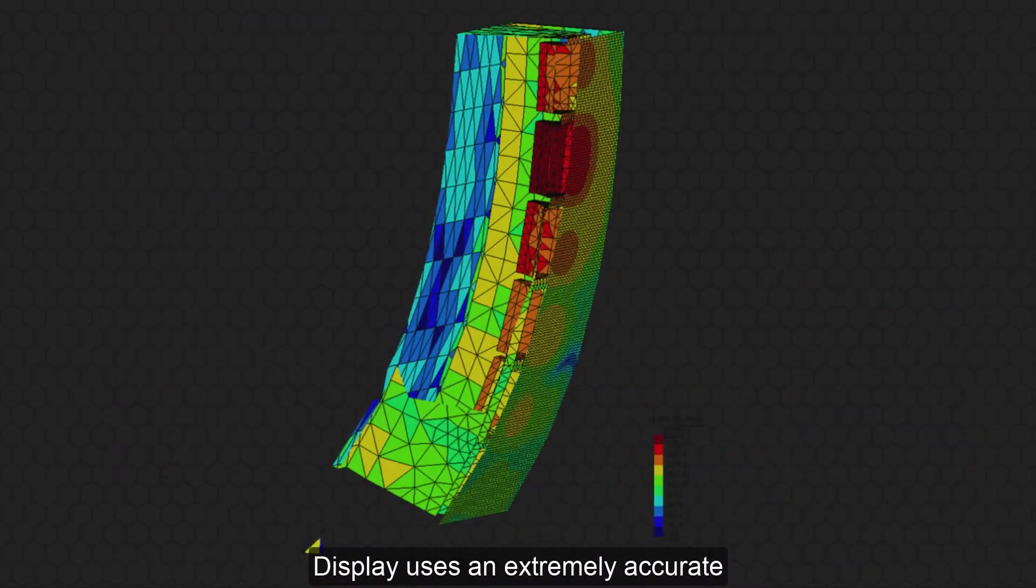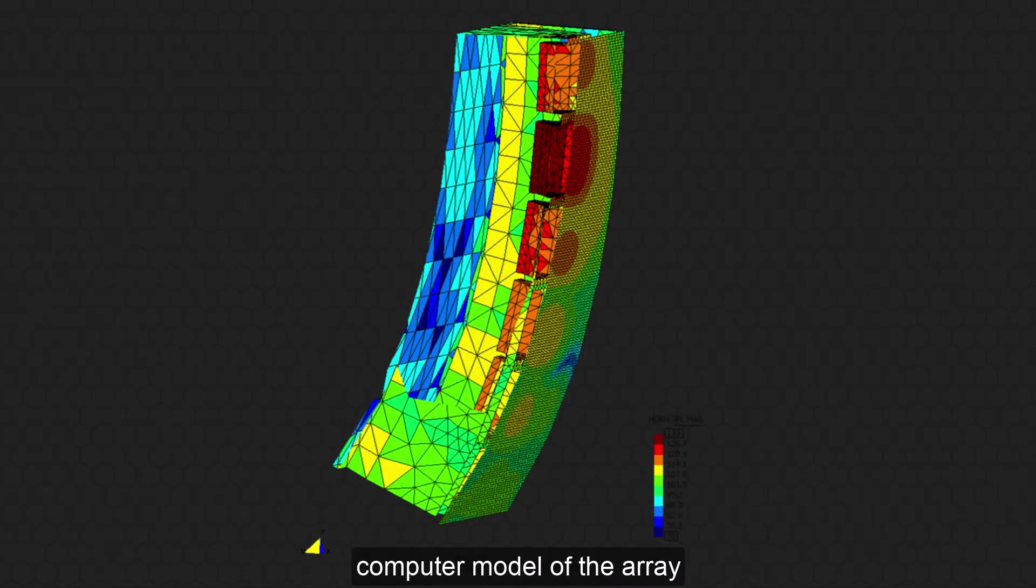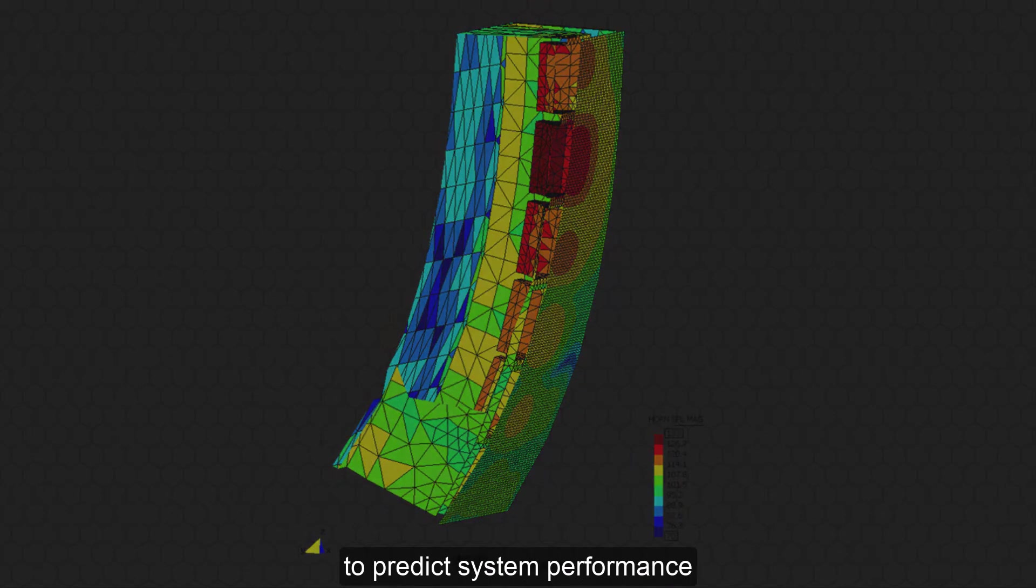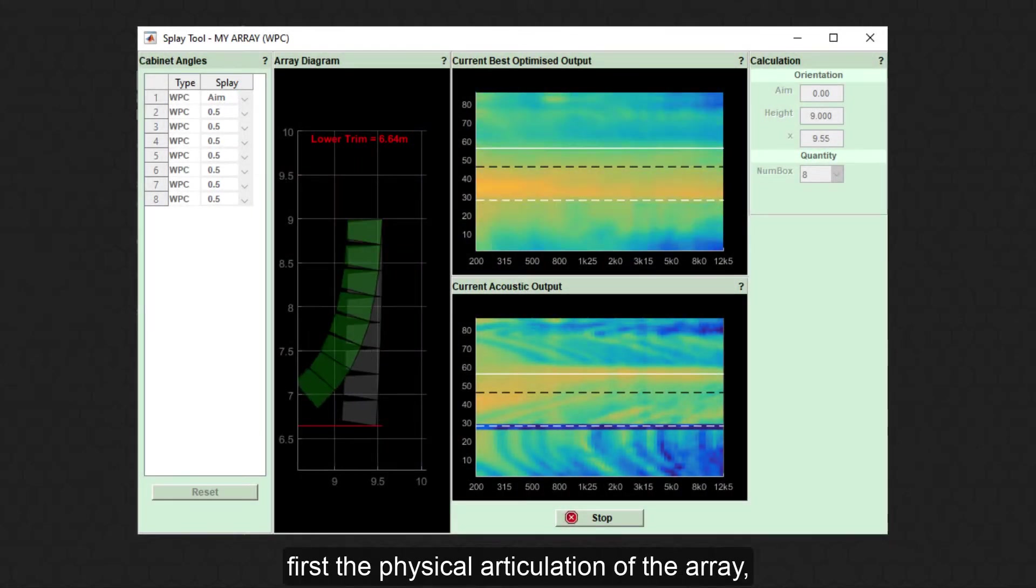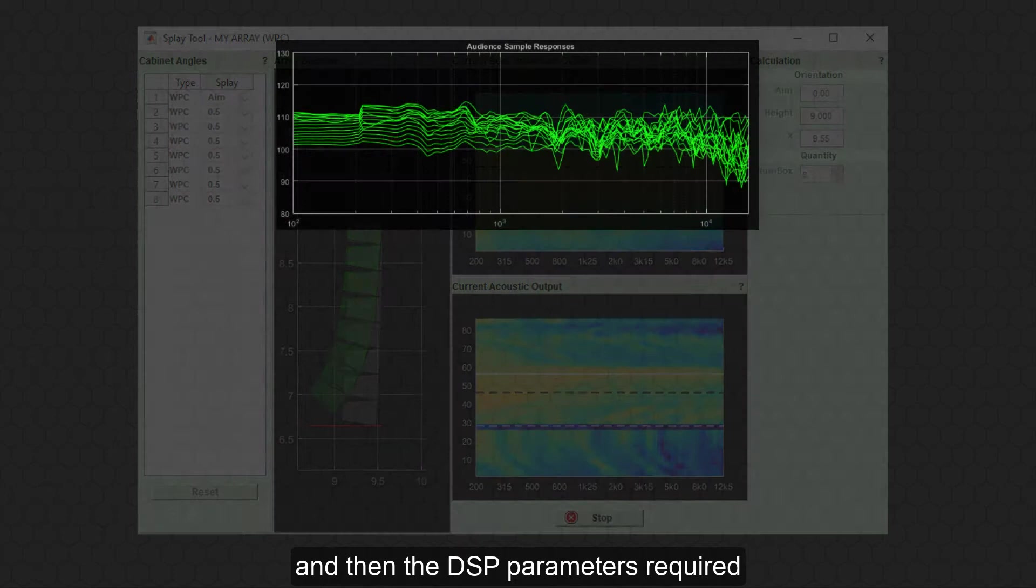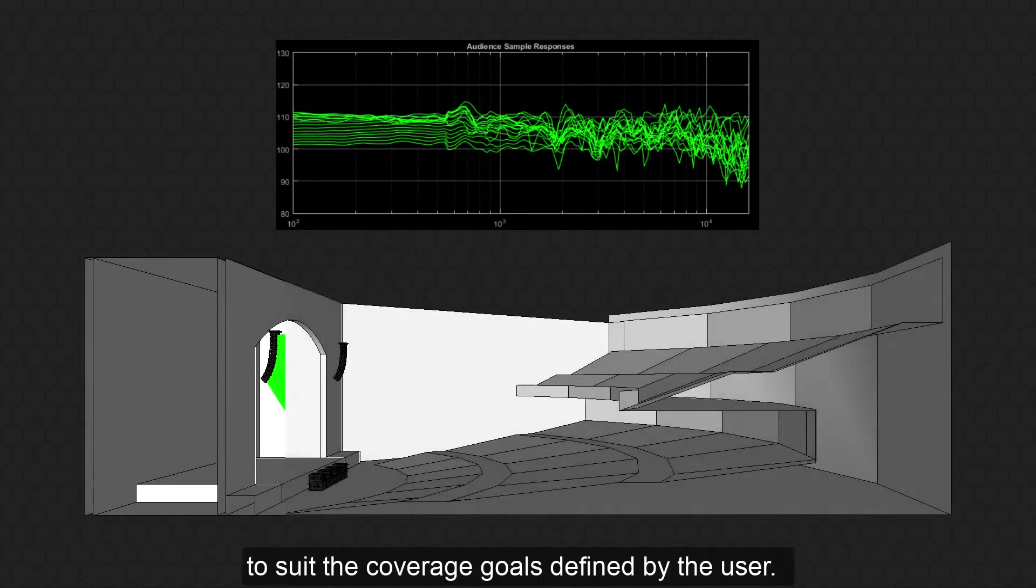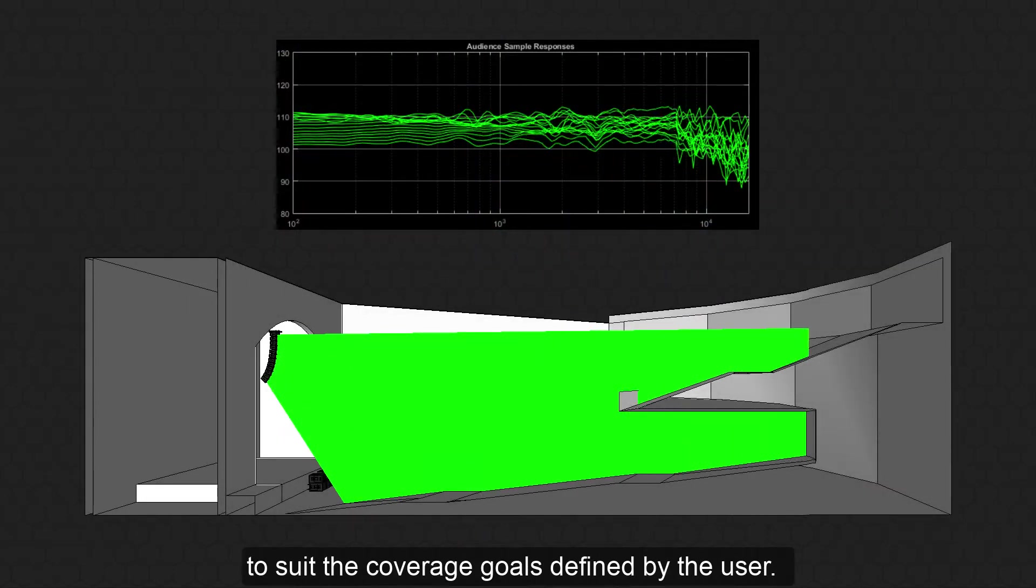Display uses an extremely accurate computer model of the array to predict system performance and automatically optimize first the physical articulation of the array and then the DSP parameters required to suit the coverage goals defined by the user.